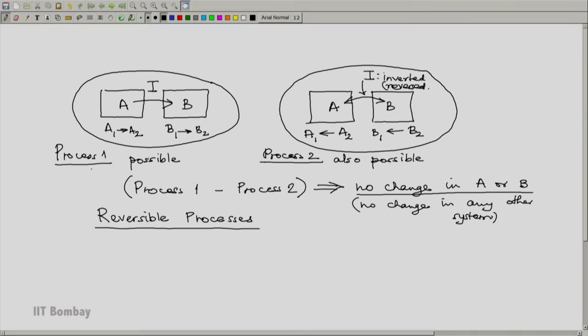Both process 1 and process 2 will be called reversible processes. Because whatever they do can be reversed or retracted or traced back by executing the process in the other direction. Not only are the original states retrieved by reversing the process, but all interactions in all detail will be retraced leaving absolutely no history, no trace.